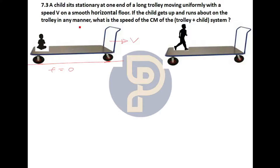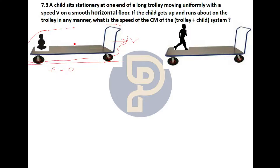For this system, what is the center of mass? The question is asking about the center of mass of this system. What change will come in the velocity of the center of mass, or will there be no change? The trolley is moving with speed v on a smooth floor. If the child gets up and runs about on the trolley in any manner, what is the speed of the center of mass of the trolley plus child system?